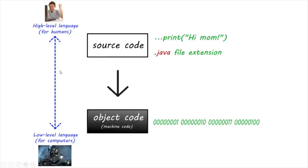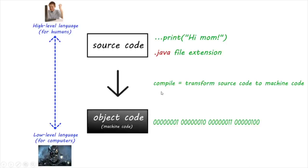Let's begin with the basics. Computer languages are on a spectrum between being high-level and low-level. Computers only understand binary, referred to as machine code — a low-level format that a machine can understand. However, humans have difficulty reading binary since it's all ones and zeros. To create machine code, we write in a format called source code, which is understandable by humans, and compile to machine code. When we create Java source code, the file ends with a .java file extension. Think of compiling as transforming source code to machine code, because machines can't read source code and vice versa.